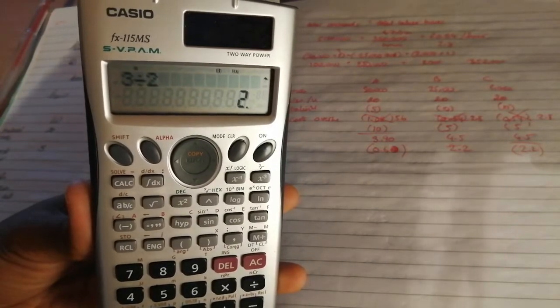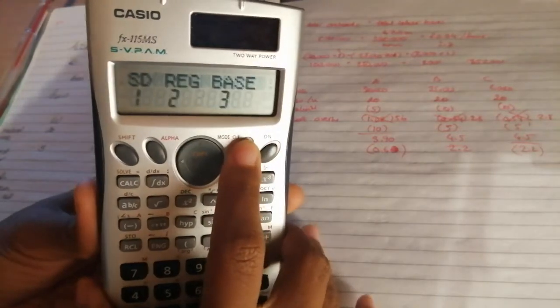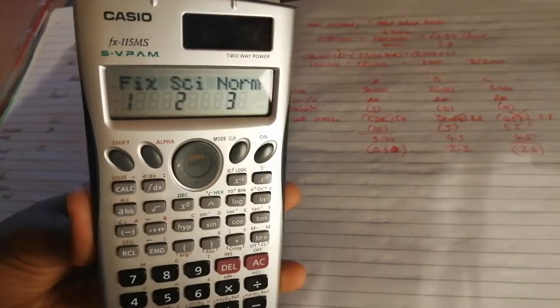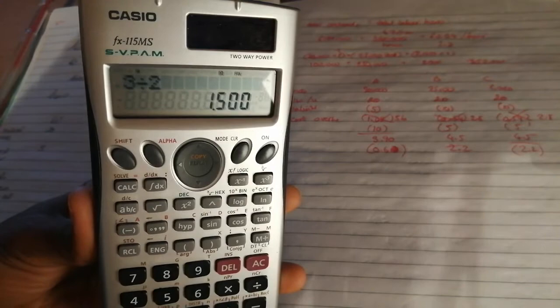So instead of giving you 1.5, it's rounding it up to two. So you do be careful, which is why I prefer having it to three decimal places. Fix one, when you decide, you press I want three decimal places, there 1.500.